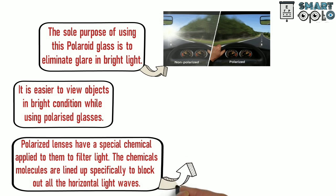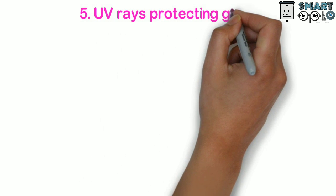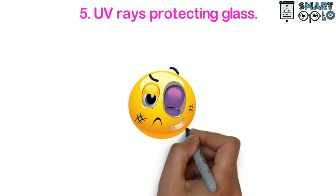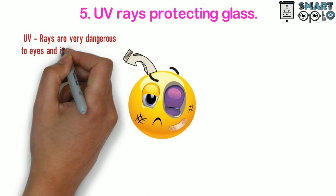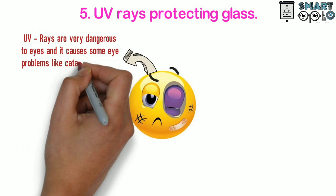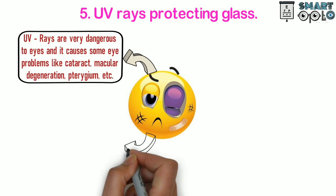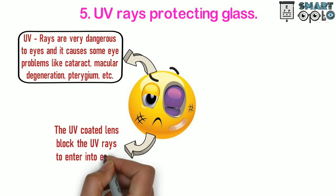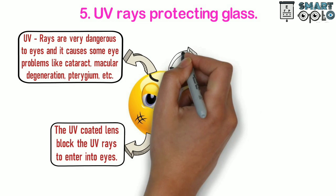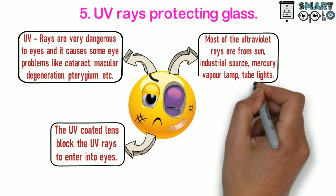The last type of special glass is UV rays protecting glass. Violet rays are very dangerous to eye and cause some eye problems like cataract, macular degeneration, pterygium, etc. The UV coated lens blocks the UV rays from entering into the eyes. Most of the UV rays are from sun, industrial sources, mercury vapor lamps, and tube lights.